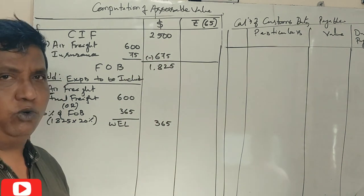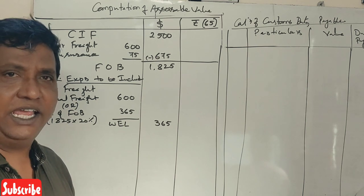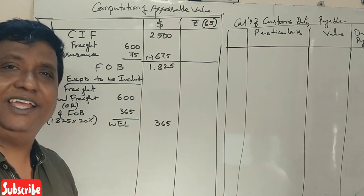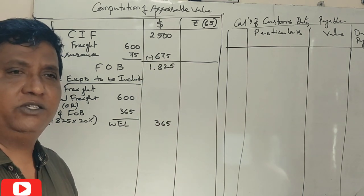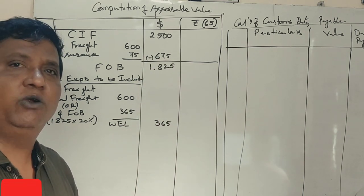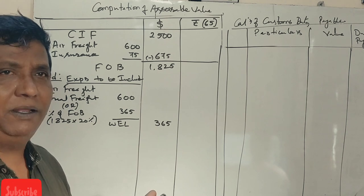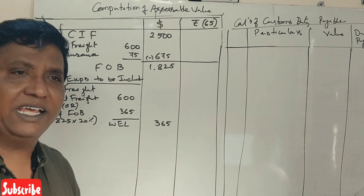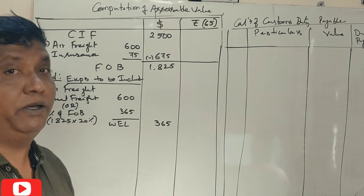Now we have the direct CIF value. CIF value: handling charges, loading, and unloading are not applicable. The CIF value is $2,500, which is the assessable value.